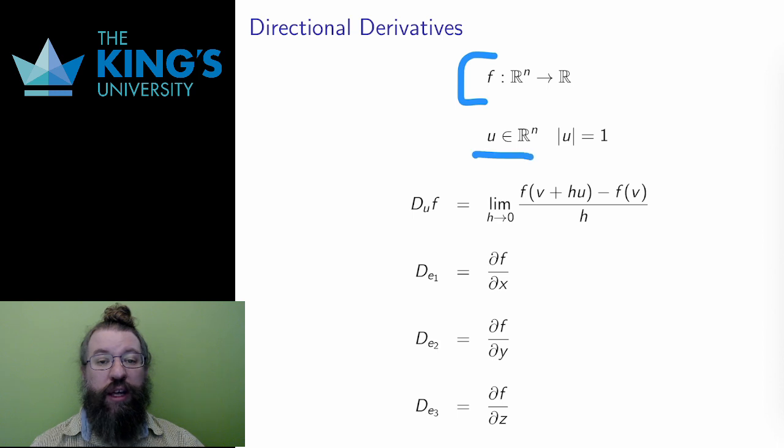I measure the rate of change by a local direction vector u. However, I need to be careful here. I only care about the direction of this local direction, not the length of it as a vector. Therefore, for this definition, I will assume that u is a unit vector, a vector of length 1.